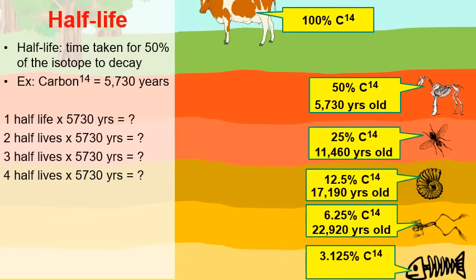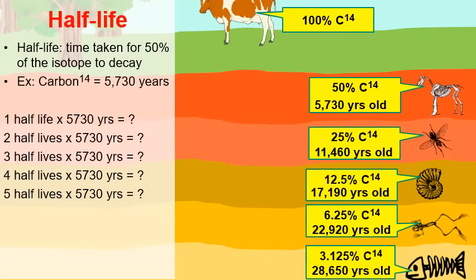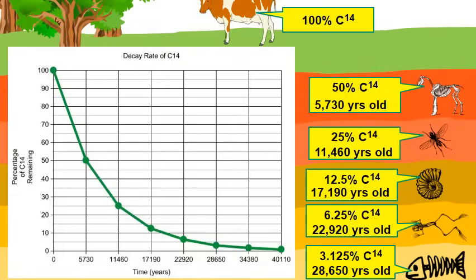Finally, a fifth fossil — let's say a fish — analyzed and found to have 3.125% of its carbon-14 remaining. That means five half-lives have passed, and five times 5,730 years gives us an estimated age of about 28,650 years old. We can then plot all of this information on a graph.